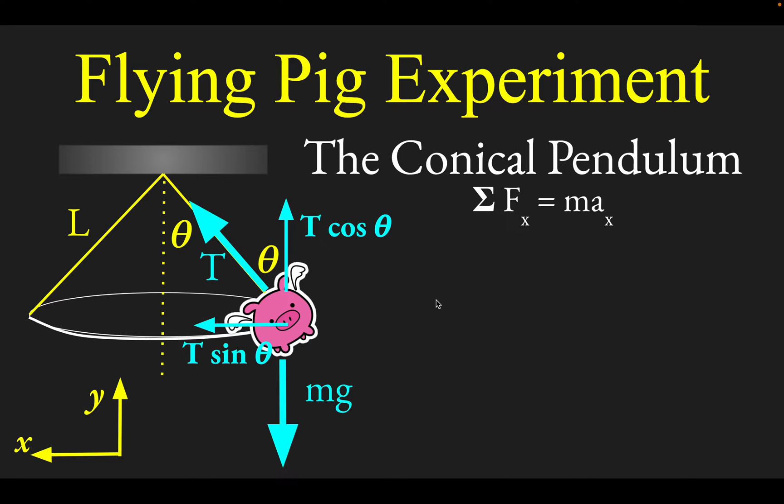Now let's apply Newton's second law in the x and y directions. If you look in the x direction, there's only one force, T sin θ, and that is causing the acceleration due to turning. That acceleration is the famous centripetal acceleration, v²/R, where R is the radius of your orbit.